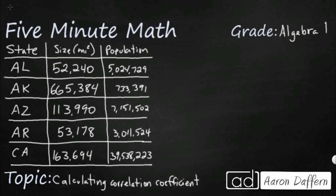Let's look at what the possible range is going to be. When we are talking about the correlation coefficient — we'll calculate it using a graphing calculator in just a moment, but let's first interpret it — it's going to show up as r, and it's going to range from negative 1 to 1.